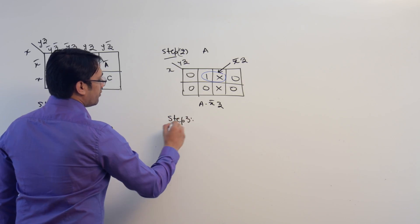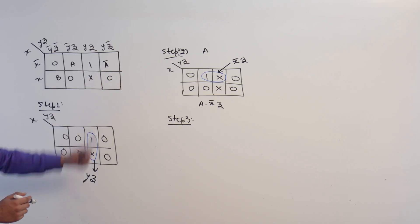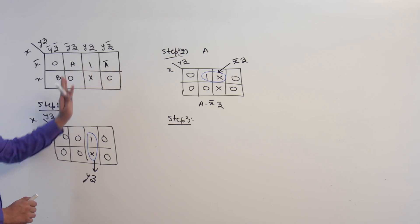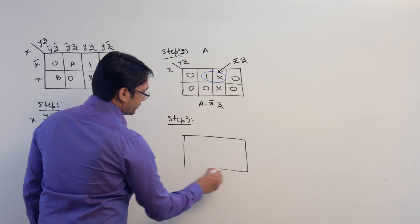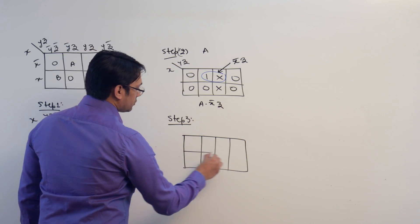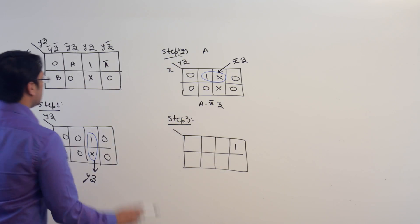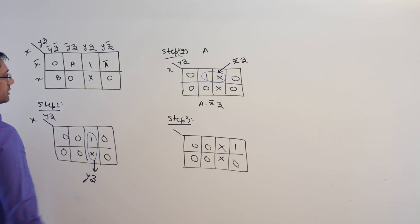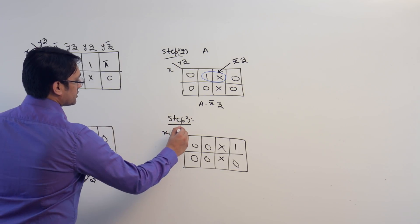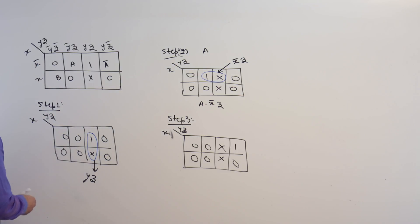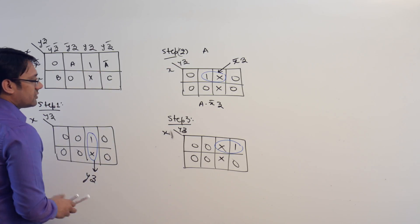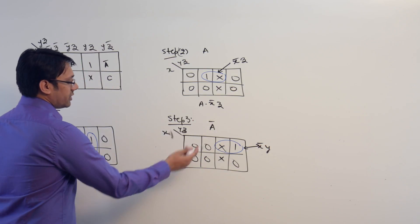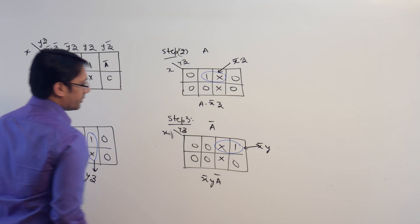Then take step three: take another variable — the next variable is a complement. For a complement, keep a complement as one, keep every other variable as zero, and keep the ones as don't care. So keep a complement as one, keep a, b, and c as zero, and make the ones don't care. Now make a subcube. The subcube is representing x complement and y, and since we created this for a complement, the expression is x complement, y, a complement.